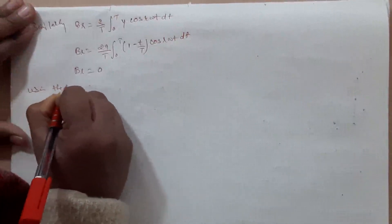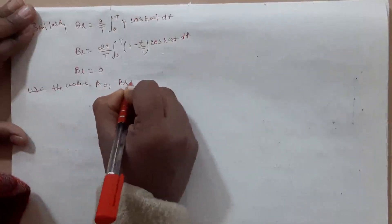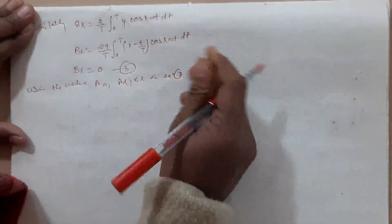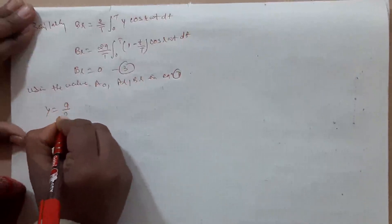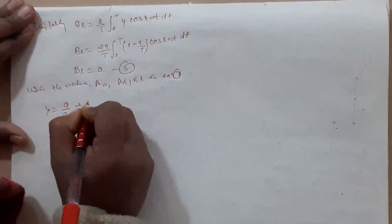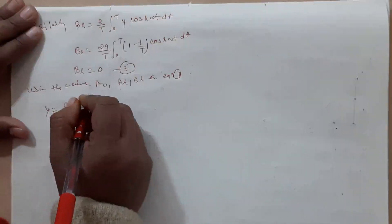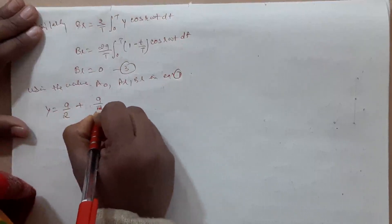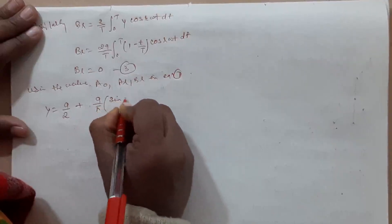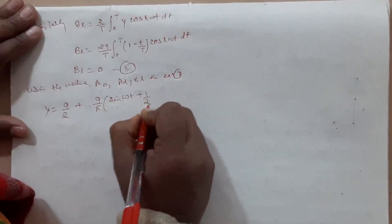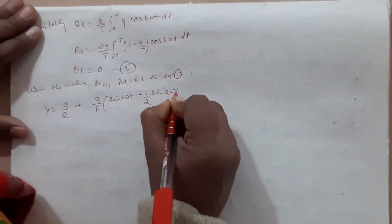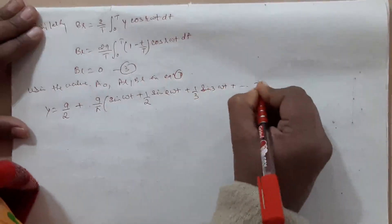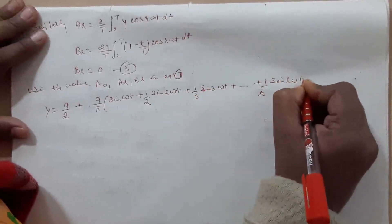Using the value of a0, ar, br in equation 1 — jab equation 1 mein put karthay then y is equal to a0 to a, a by 2, plus a1, a2, a3 — jitne bhi terms thar woh sari value r ki equivalent aethi. a/π then sin(ωt), 1 by 2·r, jab 2 hoga to sin(2ωt), then 1 by 3 sin(3ωt) plus 1 by r sin(rωt).